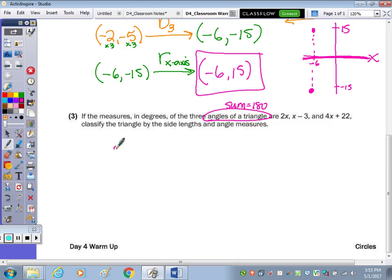So we're going to start by taking 2x, x-3, and 4x+22, adding it up and setting equal to 180. Combine your like terms, we have 4x, 5x, 6x, 7x, a negative 3 and a positive 22 is 18, equals 180.